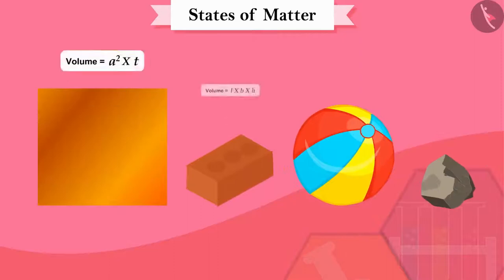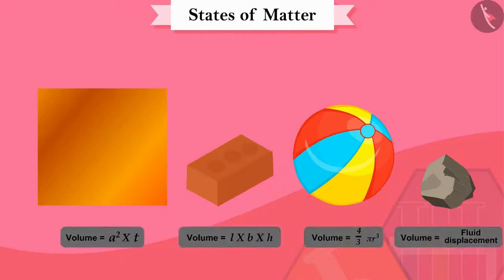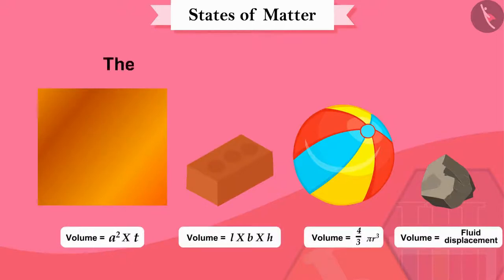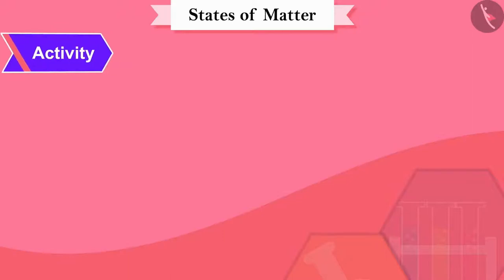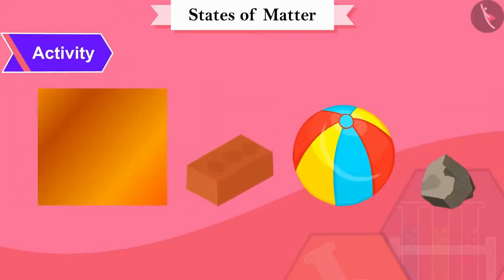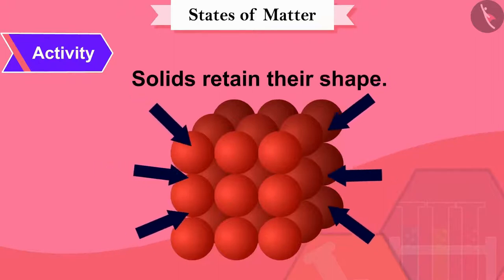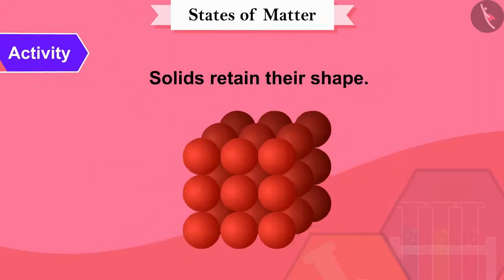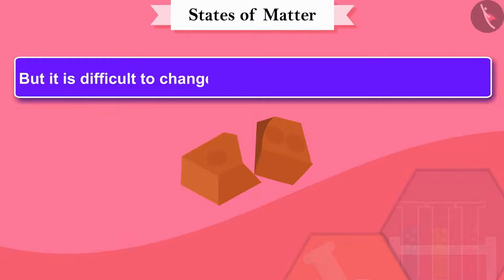If we look at their volume, we will find that the volumes of all these matters are constant — that is, there is negligible compressibility. Now let's do a fun activity. Try hitting these objects with a hammer, dragging or dropping them. Their shape does not change — solids retain their shape even when force is exerted externally. Although concrete can break when pressure is applied, it is difficult to change their shape. Therefore, they are rigid.